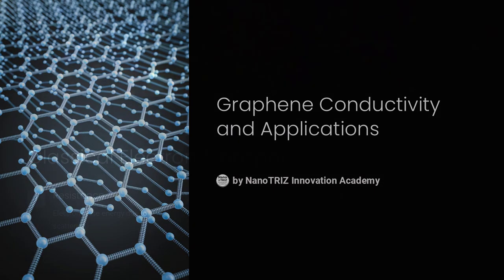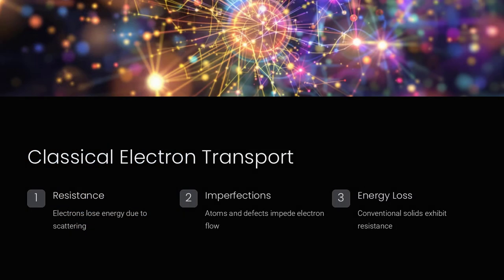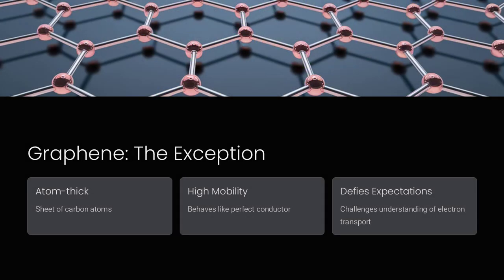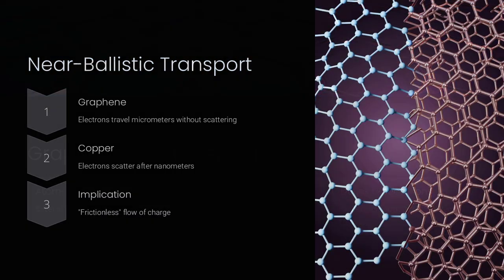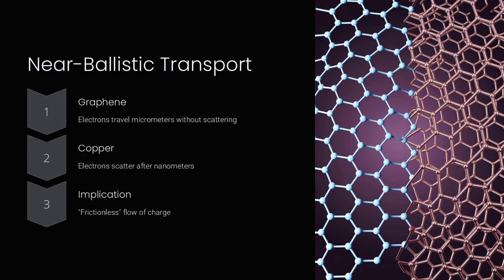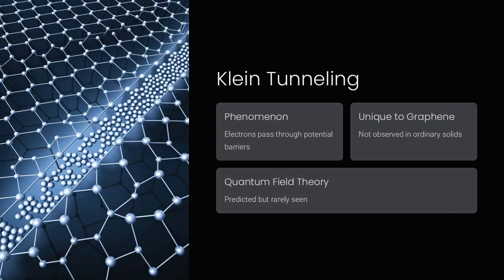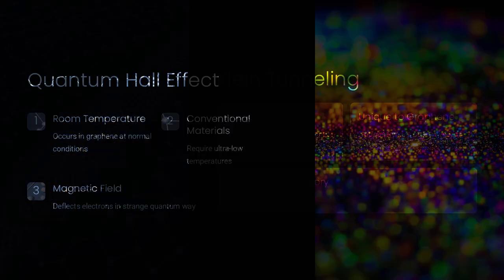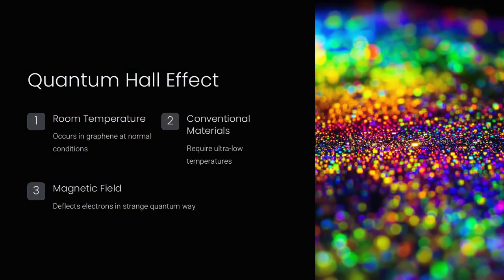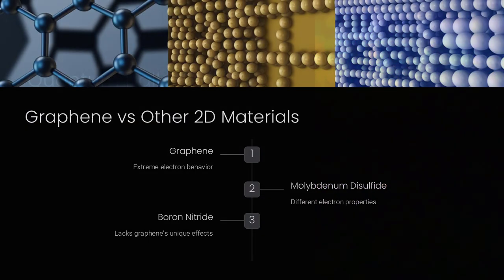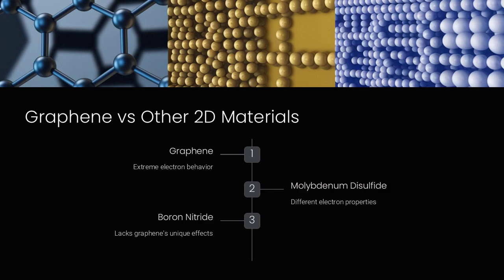In classical physics, electrons moving through a material should experience resistance, losing energy due to scattering from atoms and imperfections. However, graphene, an atom-thick sheet of carbon, defies these expectations with electron mobility so high that it behaves more like a perfect conductor than a conventional solid. Why does this happen, and does it challenge our understanding of electron transport?